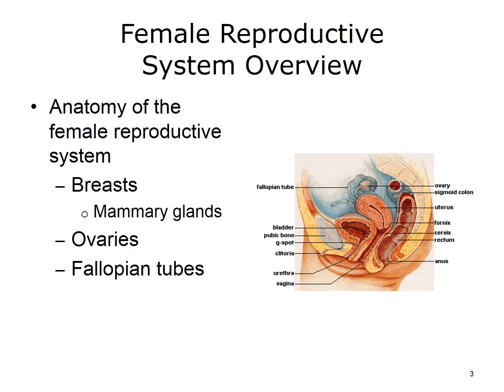Mammary glands are found in the breasts. While these glands are not part of the reproductive process, they are considered part of the Female Reproductive System since they have a lactation function – they produce milk for the newborn child. The ovaries are small, paired organs that produce the eggs, or ova, and also secrete the female hormones estrogen and progesterone. The fallopian tubes, also called oviducts, are tubes leading from the ovaries into the uterus. The oviducts are lined with cilia, hair-like projections that push an egg, or ovum, through the tubes.